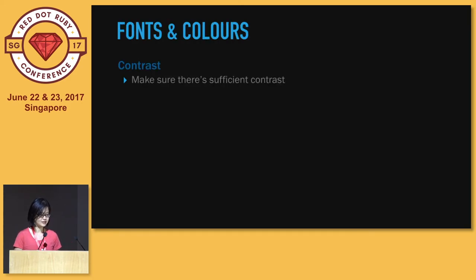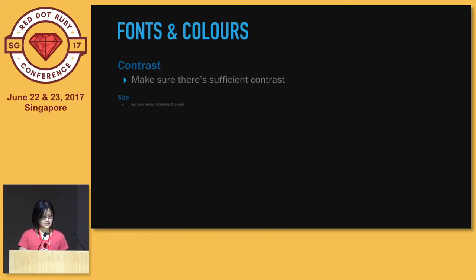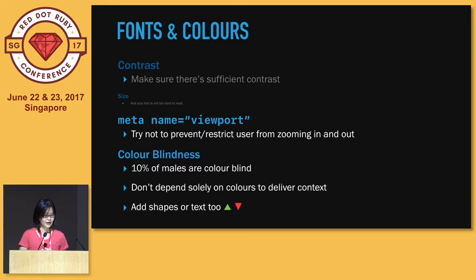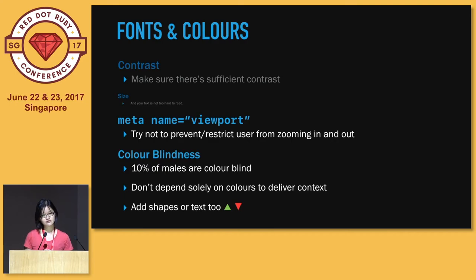Finally, consider the fonts and colors that you use on your website. Make sure there is sufficient contrast and that the size is legible enough. And especially for mobile websites, try not to prevent the user from being able to zoom in and out, or restrict user-scalable or max-scale. Remember that even for fully sighted people, there are those who are color blind. So don't depend solely on color to deliver context — for example, when displaying stock market content, try to add shapes to indicate whether something is going up or down instead of just using red or green.